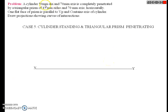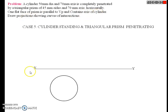Vertical cylinder dimensions are 50 mm diameter and 70 mm axis. Triangular prism dimensions are 45 mm side and 70 mm axis. The triangular prism is horizontal, with one flat face parallel to VP and containing the axis of the cylinder. Draw projections showing curves of intersection.